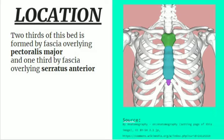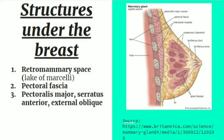Two-thirds of the bed of the breast is formed by the fascia overlying the pectoralis major, that is the pectoral fascia, and one-third is formed by the fascia overlying the serratus anterior. Just beneath the breast is the retromammary space, also known as the lake of Marcelli. It is a bursa that separates the breast tissue from the underlying pectoral fascia, allowing the breast to be freely mobile. Beneath the retromammary space is the pectoral fascia, and beneath that is the pectoralis major, serratus anterior, and external oblique muscle.